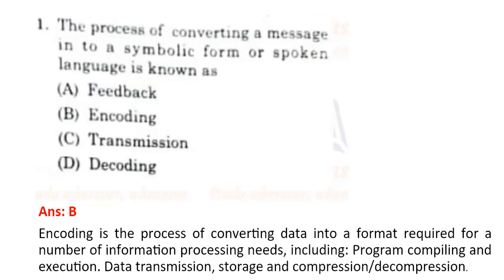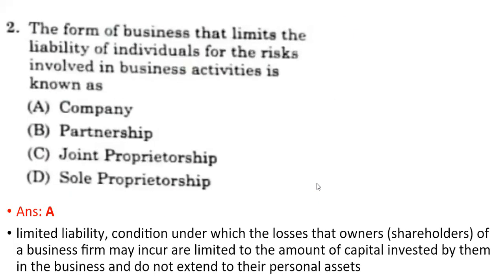Encoding is a process of converting data into a format required for a number of information processing needs, including program compiling and execution, data transmission, storage and compression including decompression. So the correct option is B.